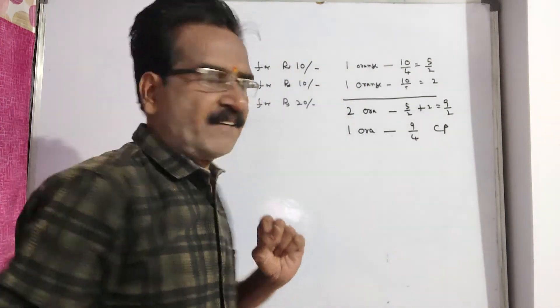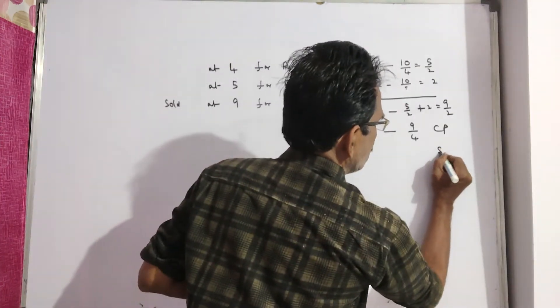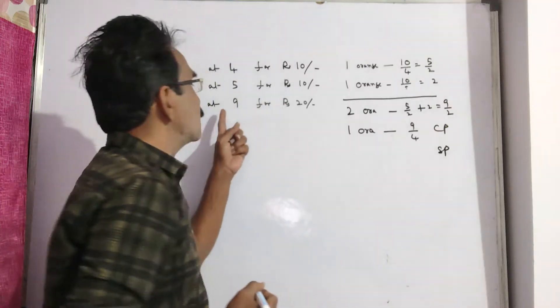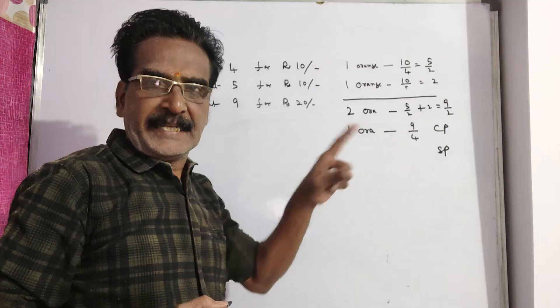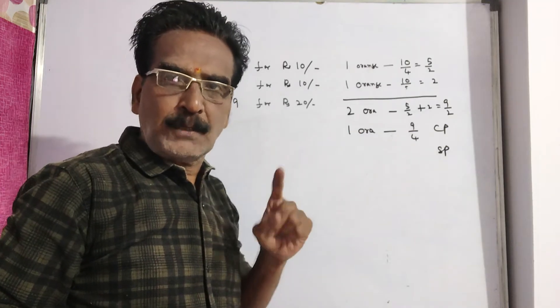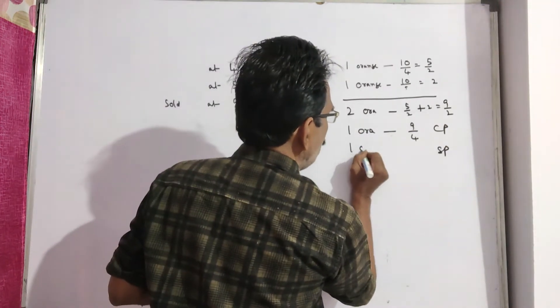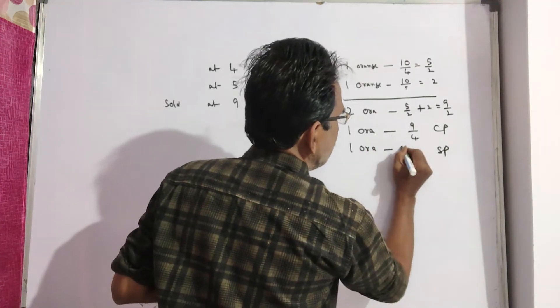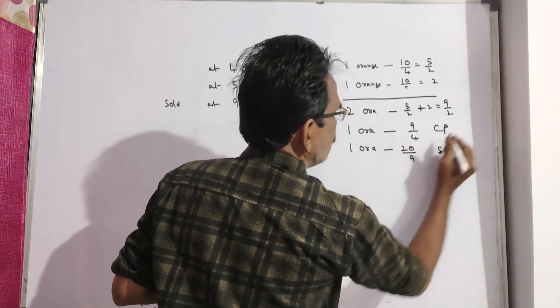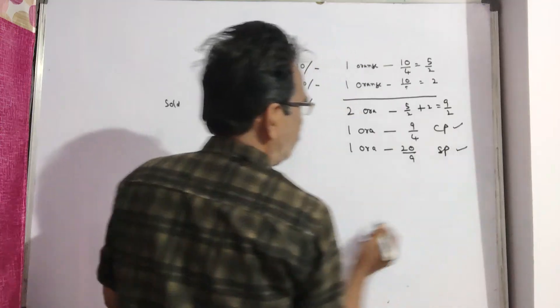What is the sold price of 1 orange? He sold at 9 for rupees 20. That means each orange sold price of 20 by 9. So 1 orange sold price of 20 by 9. So this is the cost price. This is the sold price.